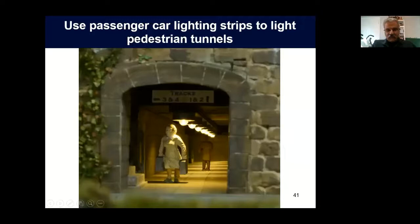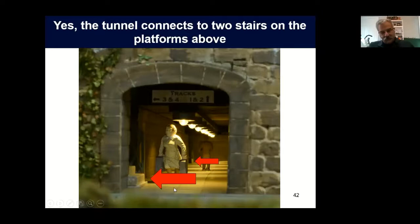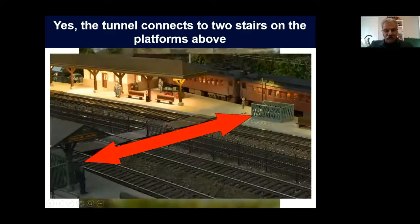Passenger car lighting strips also make an easy way to light pedestrian tunnels. This is a pedestrian tunnel under my Princeton Junction Station that goes from one platform to the other. I built the tunnel first, so I needed to figure out how to get lights in there. I simply used passenger car lighting strips — in O-scale you can get them made by Sunset for their Golden Gate Depot lines. Just connect them up, adjust the dimness properly, and you've got a nice well-lit tunnel. You can actually shine a flashlight down the stairs and illuminate the tunnel — I've had people do that.